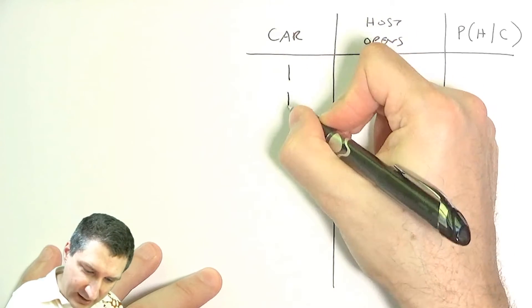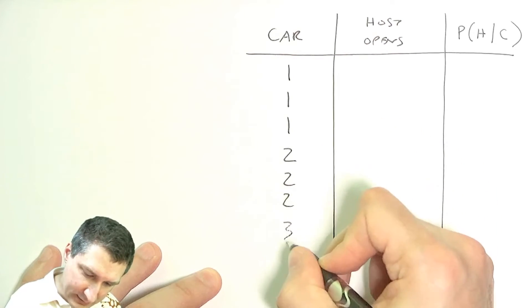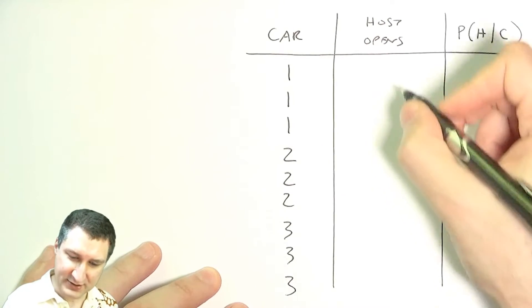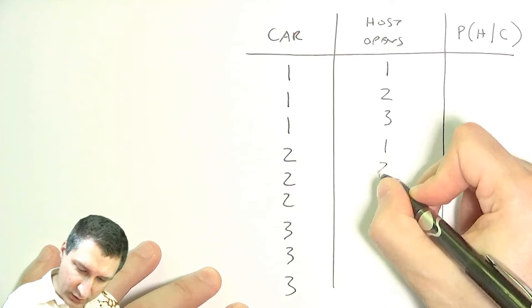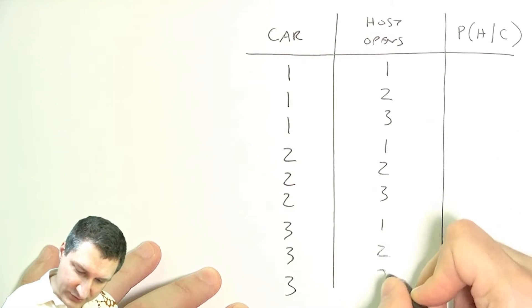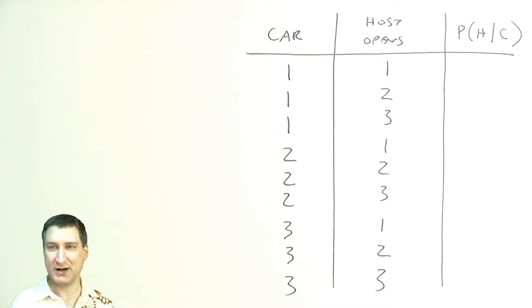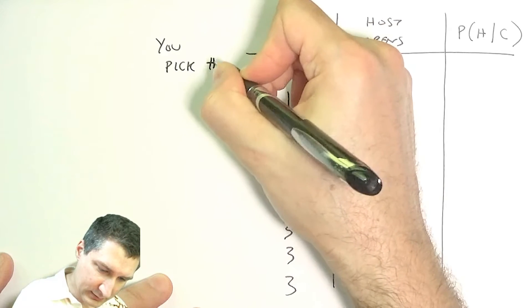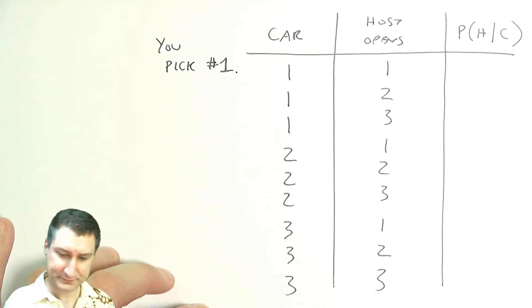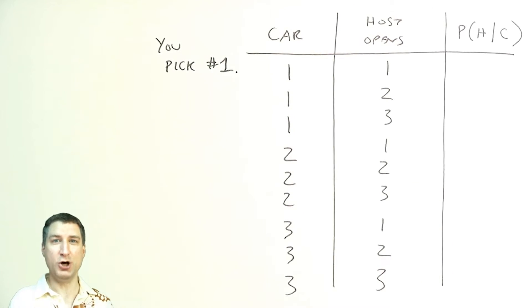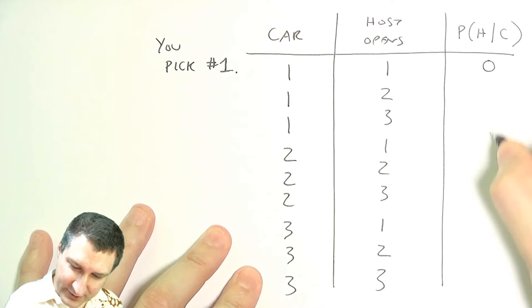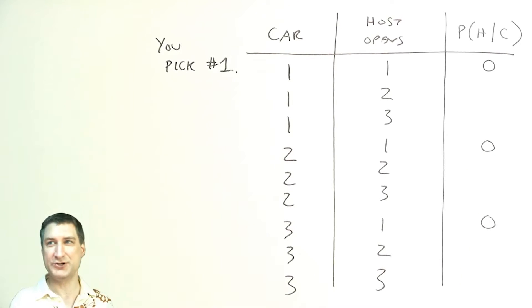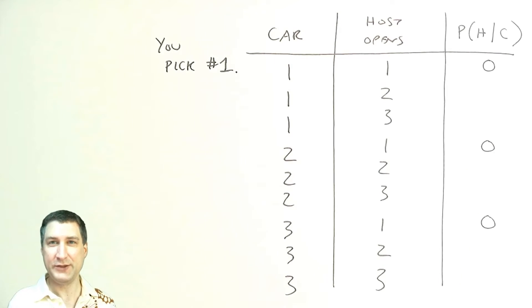There are three doors where the car could be, and there are three possibilities for each door where the host might open. And some of these things we're going to see are not possible. So you pick door number one. The host is never going to open door number one. The whole point is to tempt you to switch or not. So definitely under no circumstances is the host going to open your door to show you what's inside. The only thing you can do is open up a door where the goat is.